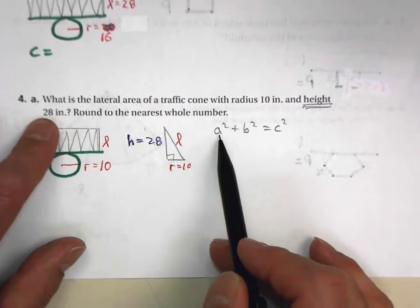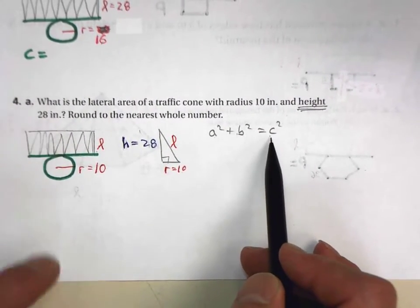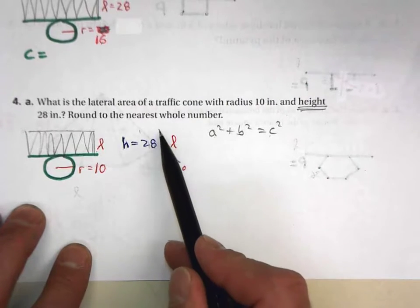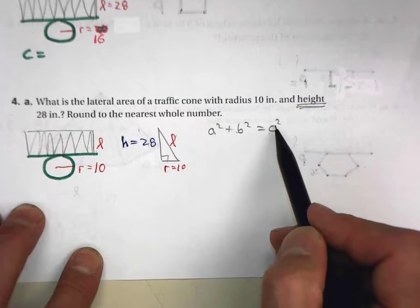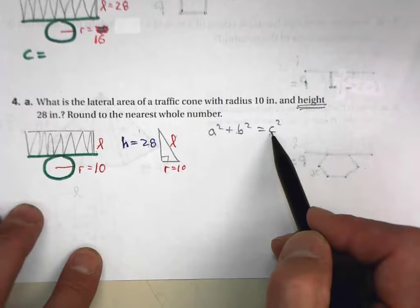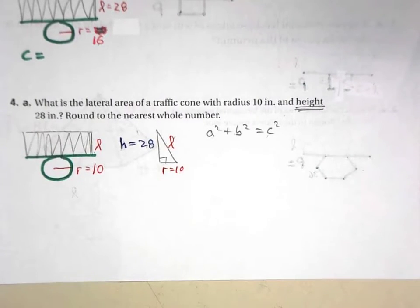You can use A squared plus B squared equals C squared, the Pythagorean theorem, to find the slant height. The slant height goes in for C because that's the hypotenuse.